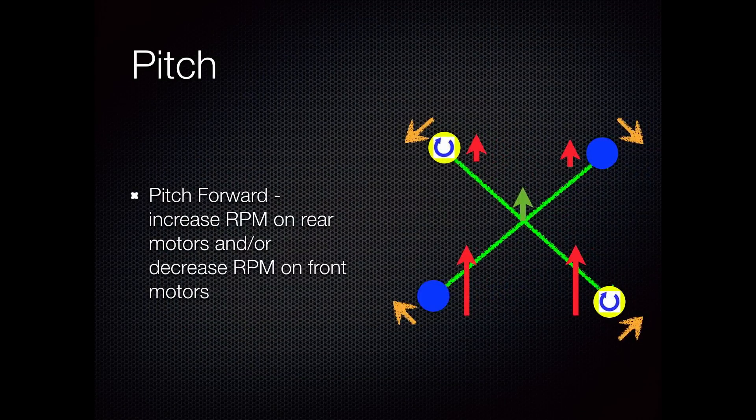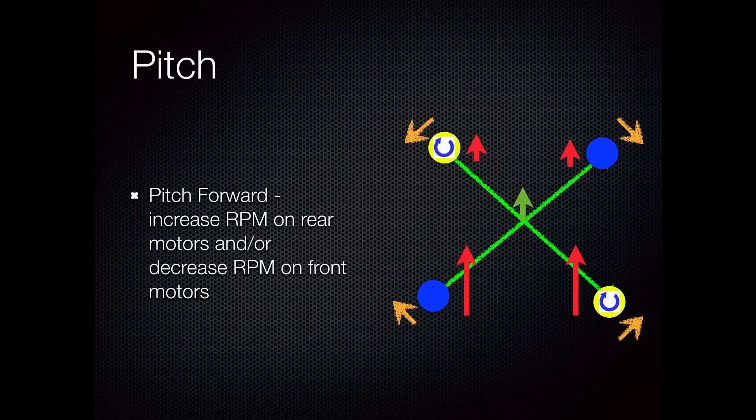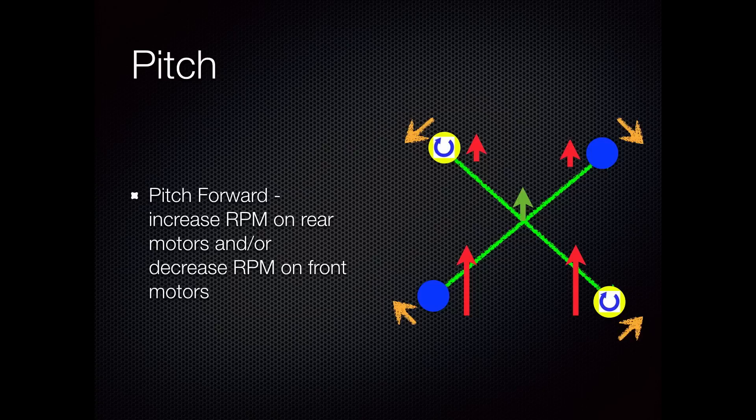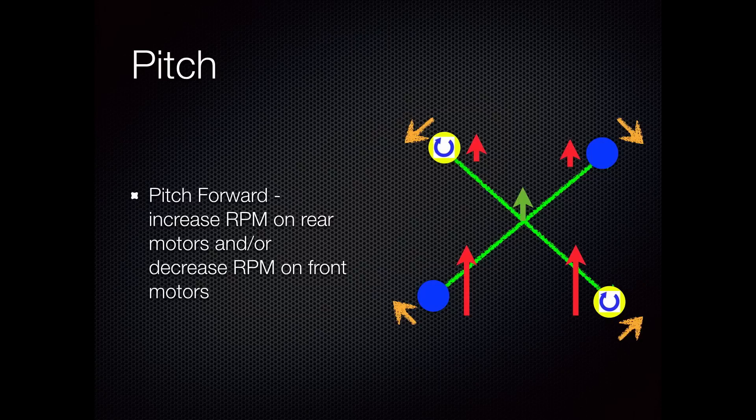The next basic thing is pitch, which controls whether or not the quad rotor flies forward or flies backwards. To pitch the nose down and the rear of the quad rotor up, which would result in a pitch forward moment, you increase the RPM on the rear motors and/or decrease the RPM on the front motors.